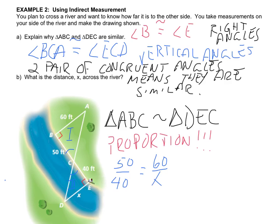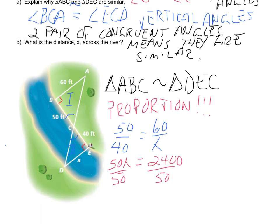But, at this point, now I just have to follow my cross products. Well, if I do my cross products, I am going to get 50x equals 2400. When I divide by 50, I will then get my final answer of 48. And, we always want to make sure that we have the label that is correct. We are dealing in feet. So, the distance across the river is 48 feet.